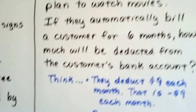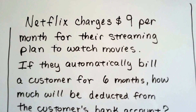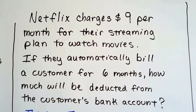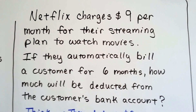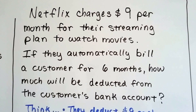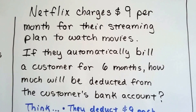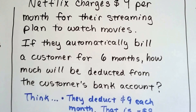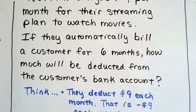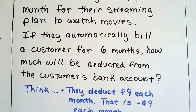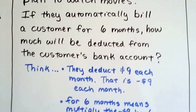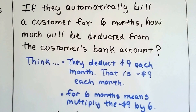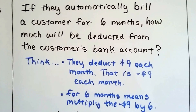Let's try another one. Netflix charges $9 per month for their streaming plan to watch movies. If they automatically bill a customer for six months, how much will be deducted from the customer's bank account? They deduct $9 each month — that's minus $9 from the bank account. For six months means we've got to multiply that negative $9 by six.